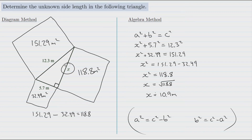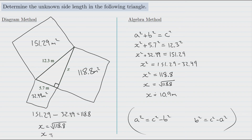So how do we find the length of this side? We need some number multiplied by itself to give us 118.8, so we find the square root of 118.8. x equals the square root of 118.8, which equals approximately 10.9 meters. Two methods for finding the unknown side when it is not the hypotenuse — the key is to remember we'll have a subtraction involved.